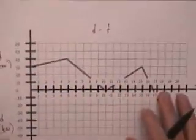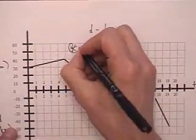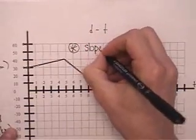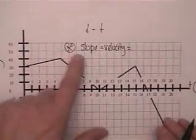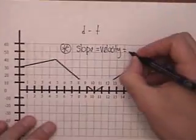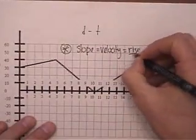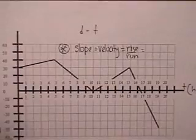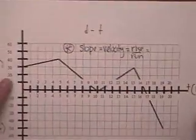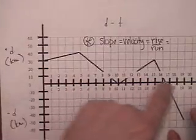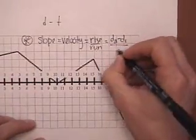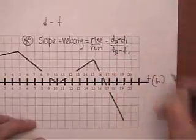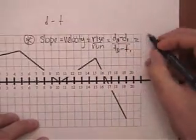To find the velocity of segment one: a very key piece of information is that slope equals velocity on a DT graph. If you remember your velocity formula, it's rise over run — or in formula form, your y-axis divided by your x-axis. Our y-axis is D and our x-axis is T, so it's D2 minus D1 over T2 minus T1. That's your slope formula, and that's average velocity.